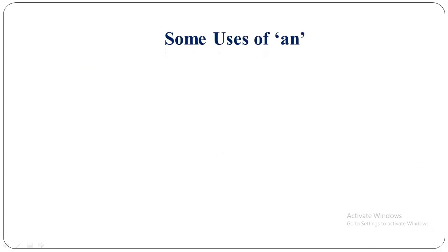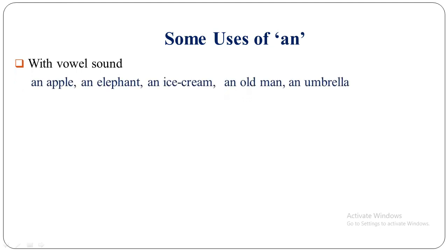Now some rules about AN and where we should use AN. The first rule: with vowel sound. We should use AN before a noun that has a vowel sound at the beginning. There are five vowels: A, E, I, O, U. For example: an apple, an elephant, an ice cream, an old man, an umbrella.